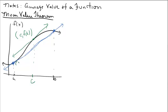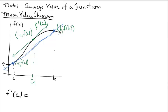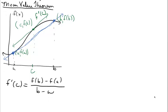This point we can call A comma F of A, and this point we can call B comma F of B. The notation we use to represent the slope value is F prime at C — that prime is important. So this is the review of the mean value theorem: instantaneous rate of change equals the average rate of change. The formula shows the slope of the tangent line expressed as delta y over delta x, where we have F of B minus F of A over B minus A.